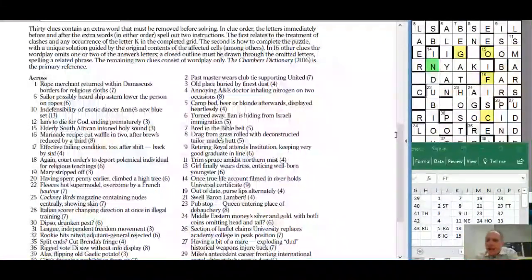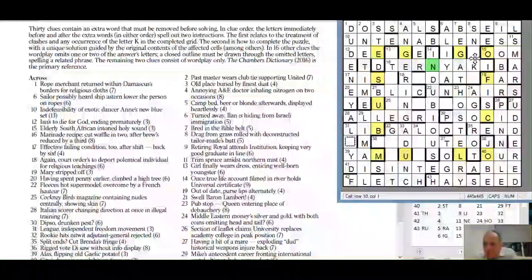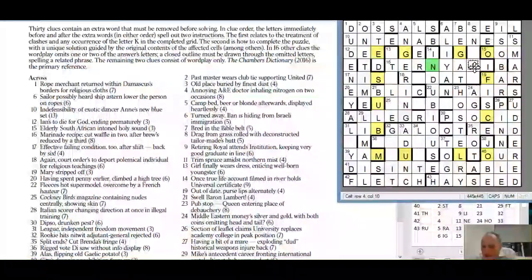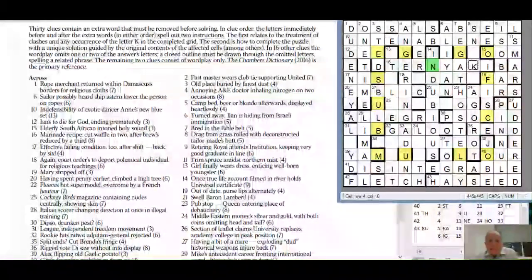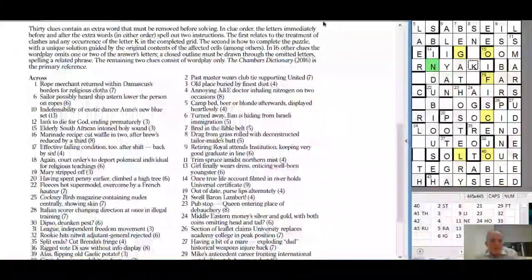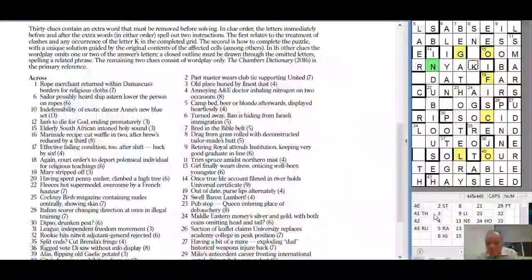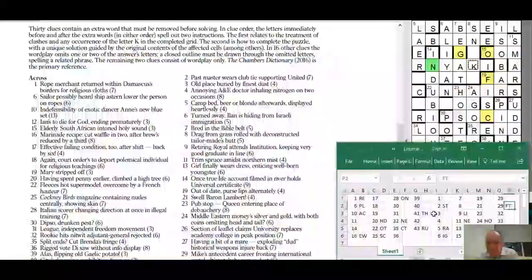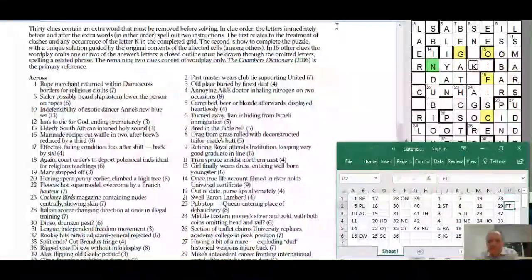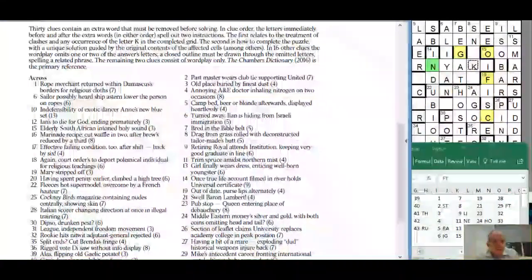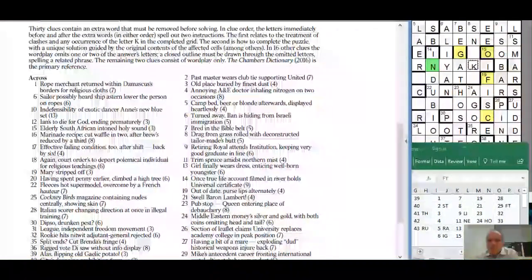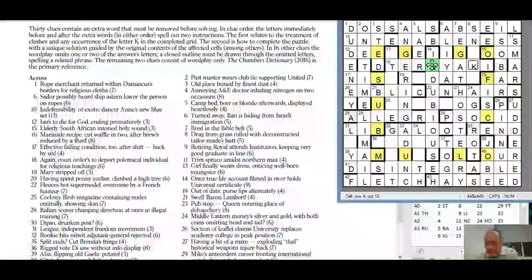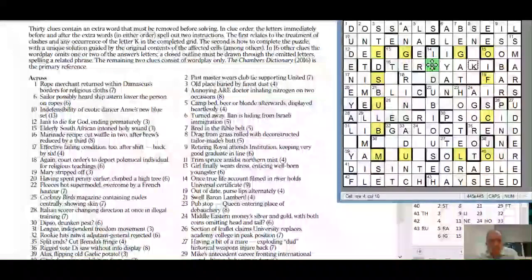The first relates to the treatment of clashes replaced with dots and any occurrence of the letter K in the completed grid. I've forgotten about that there's one there in teriyaki. So they get replaced with dots - clashes and Ks. The second is how to complete the puzzle which is connect with - connect through straight line with outline or something. The unique solution guided by the original contents of the affected cells.